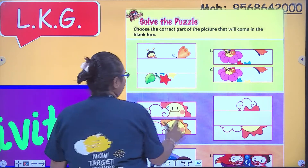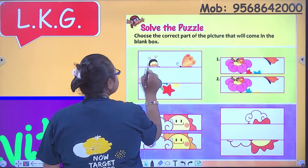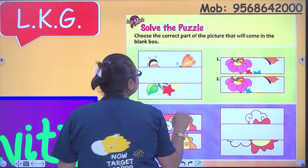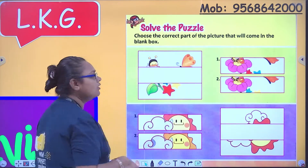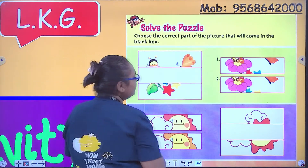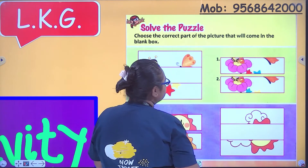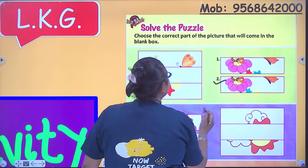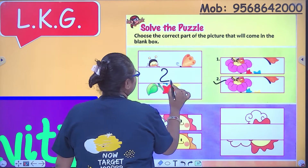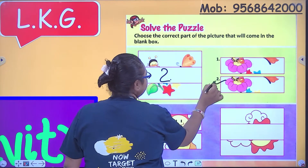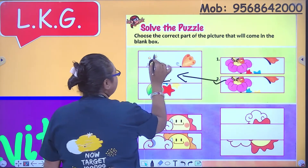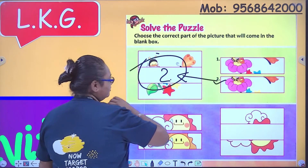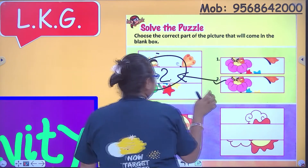Now, this is a bee. This is a fly. The correct one will be this — number two. This will be placed here, and it will become a complete picture.